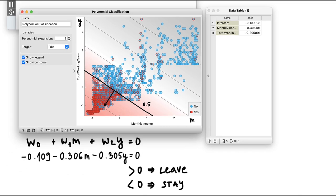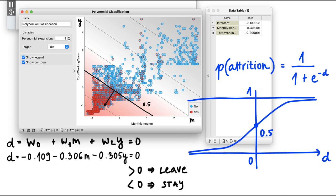The next reasonable question would be how to turn this distance, call it d, into a probability. Well, logistic regression uses the following equation, called the logistic function, which looks like this. You can see when the distance from the decision boundary is 0, the class probability is 0.5.